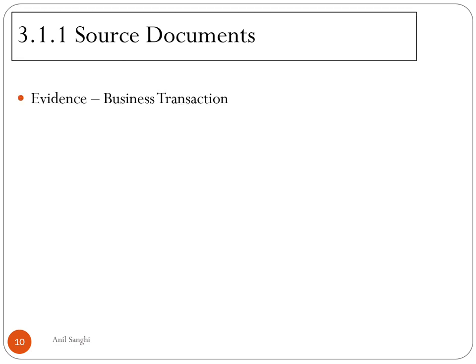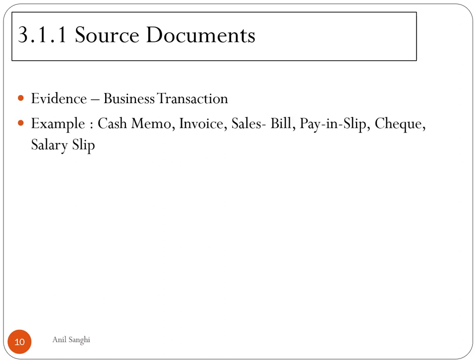The next topic is source documents. A source document is an evidence of a business transaction — it provides paper-based evidence that the transaction has taken place and money, goods, or money's worth has been exchanged. Some examples are: a cash memo, invoice, sales bill, paying slip, cheque, and salary slip. When you buy a product from a supermarket they give you a cash memo; invoices are used when you buy products on credit; a paying slip is used when depositing money into a bank; customers pay through cheque; and salary slips evidence employee payments.